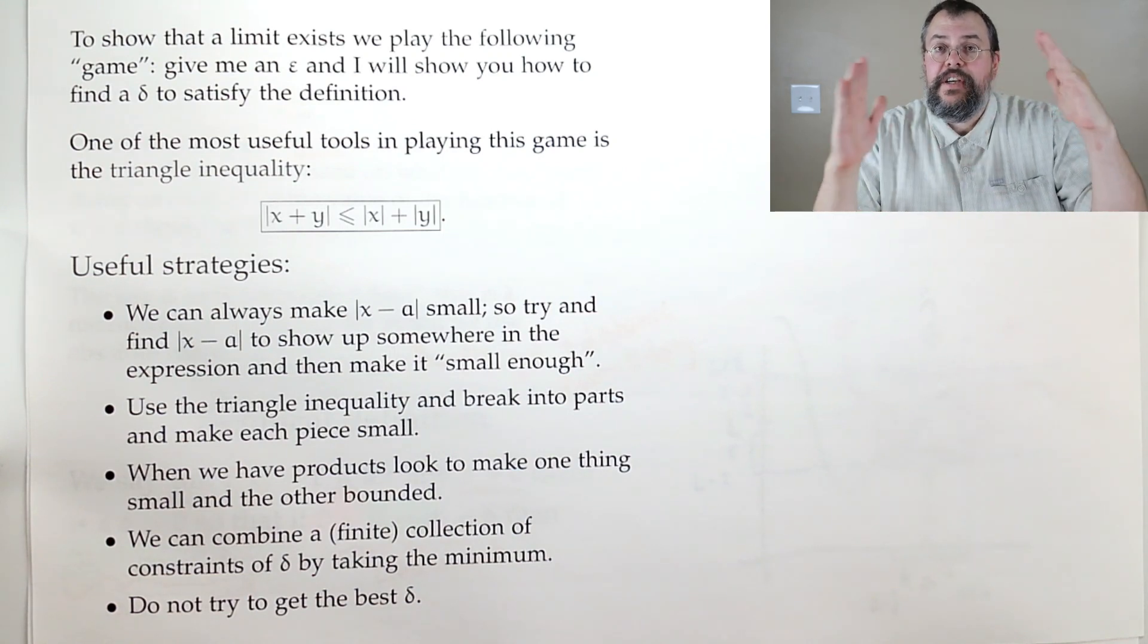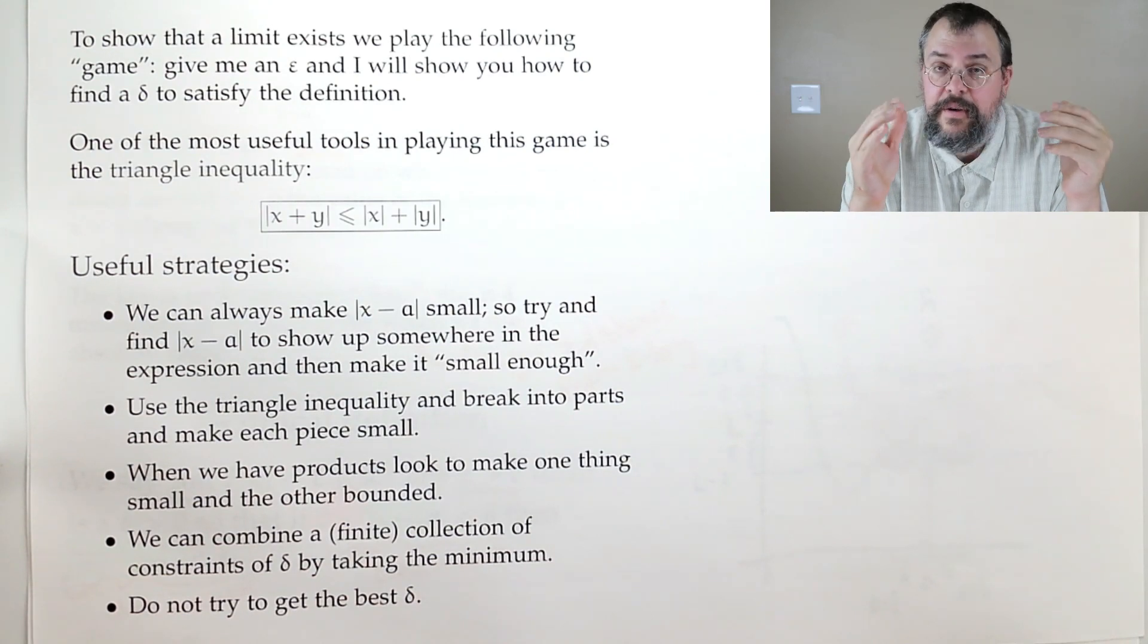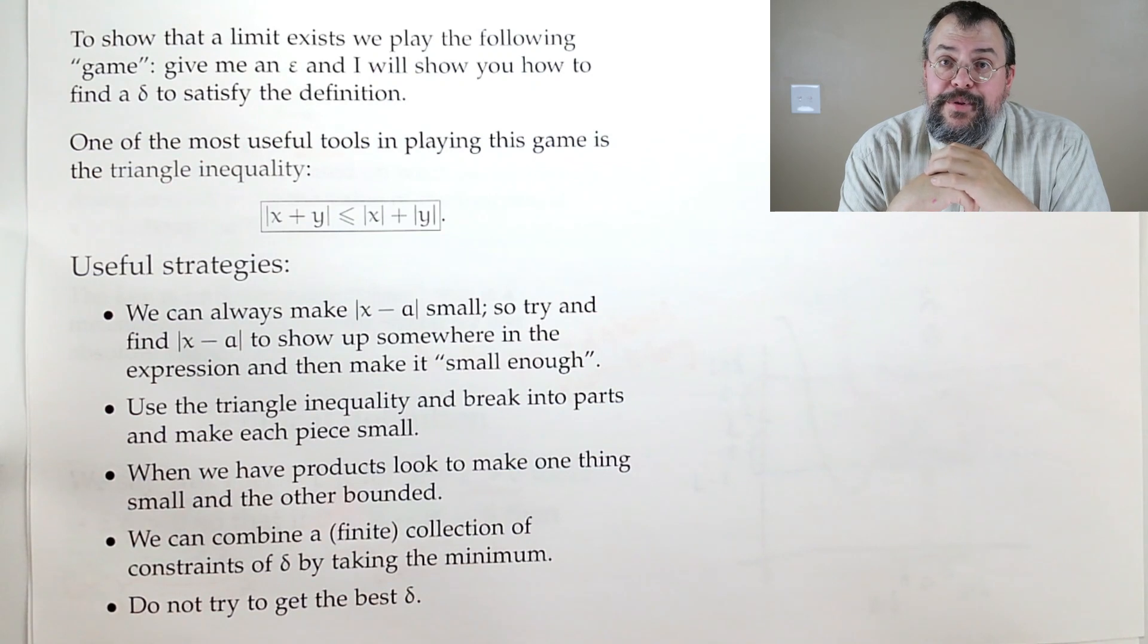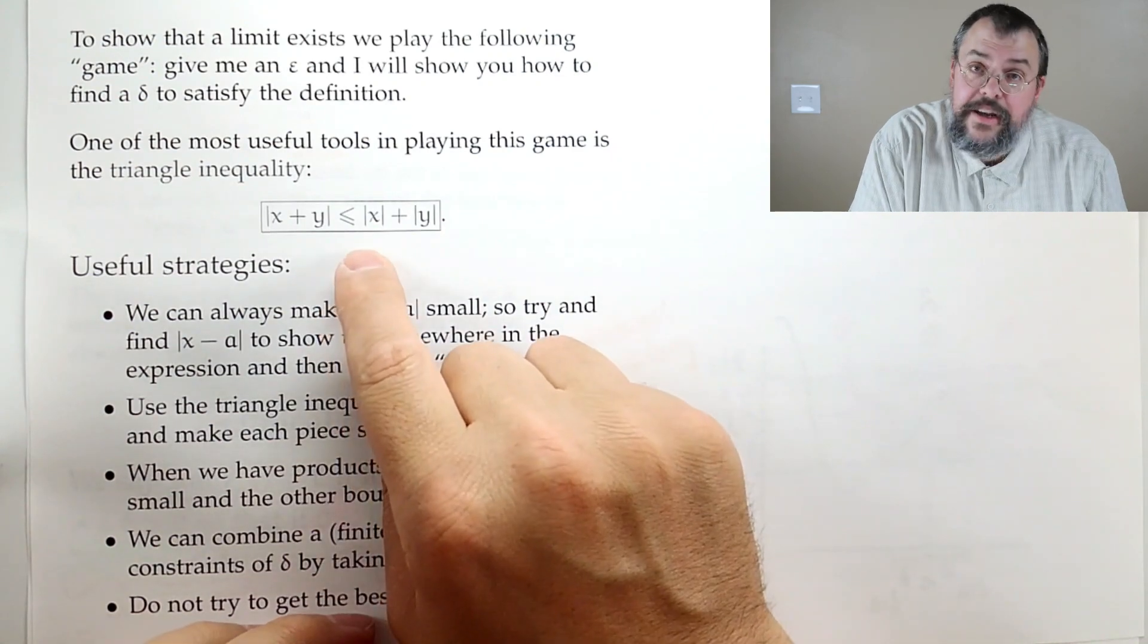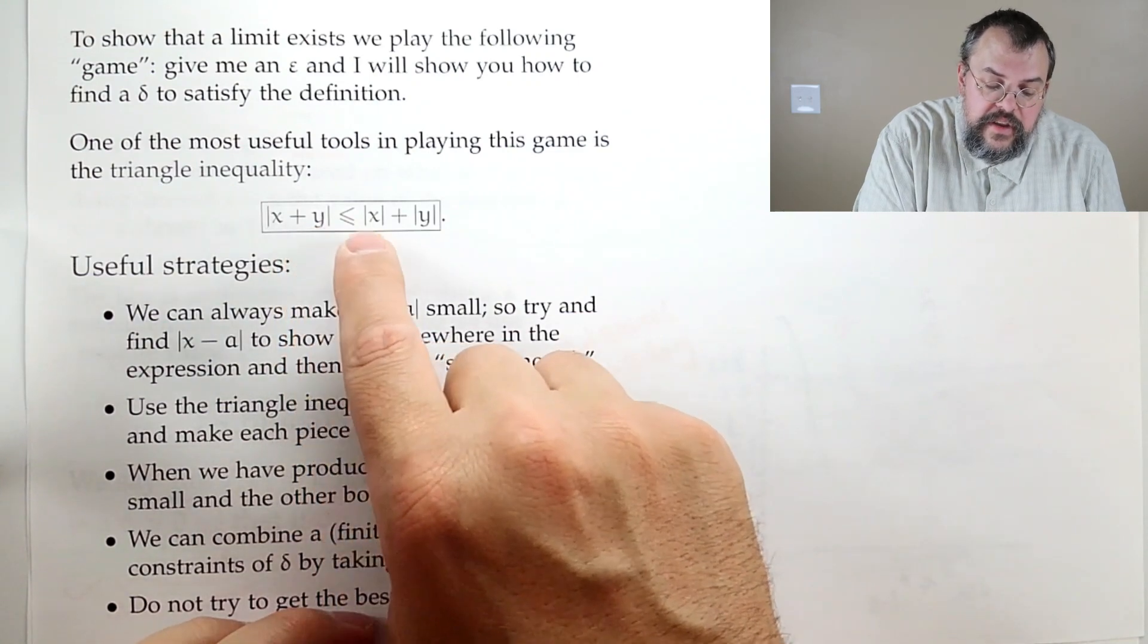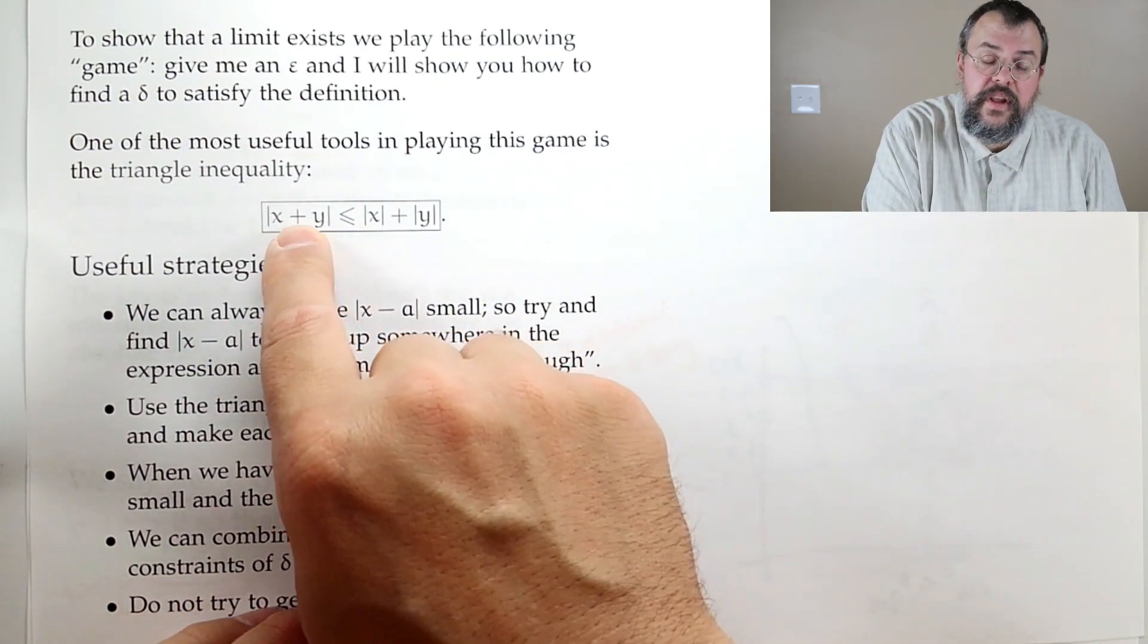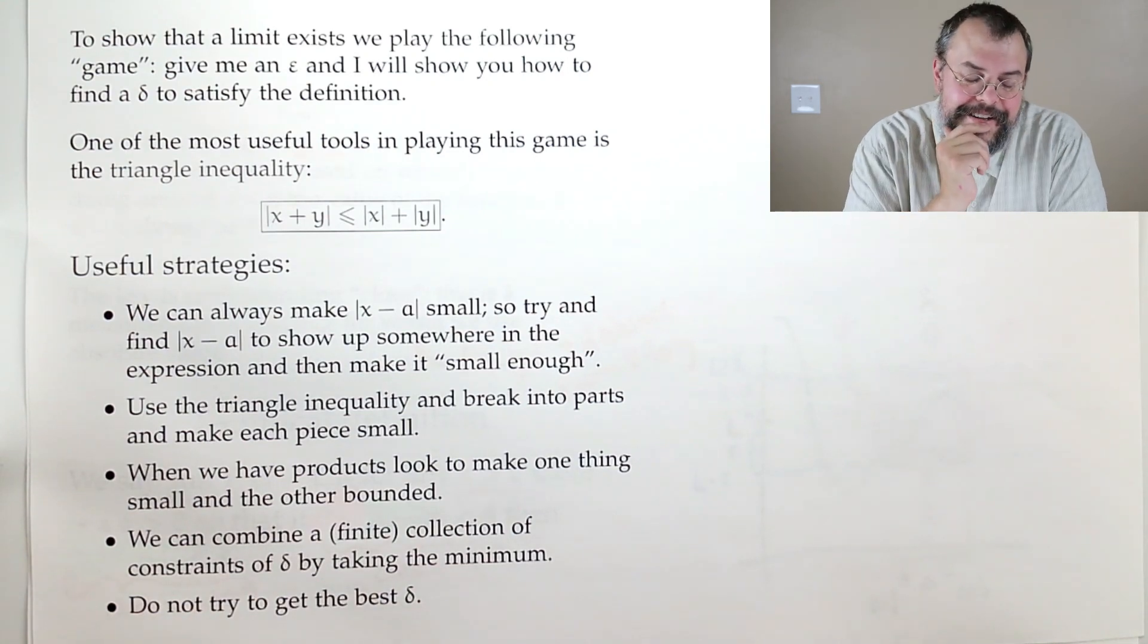Now, the choice of delta, almost always for most interesting functions, depends on your choice for epsilon, and sometimes in a very non-trivial way. So it's not an easy game to play. So how do we play the game? Well, there's a couple of tools. And now the most important tool you have, this is the best tool in your box, is the triangle inequality, which says that the absolute value of x plus y is less than or equal to the absolute value of x plus the absolute value of y. By the way, it works the same if you have absolute value of x minus y. All right. Good.